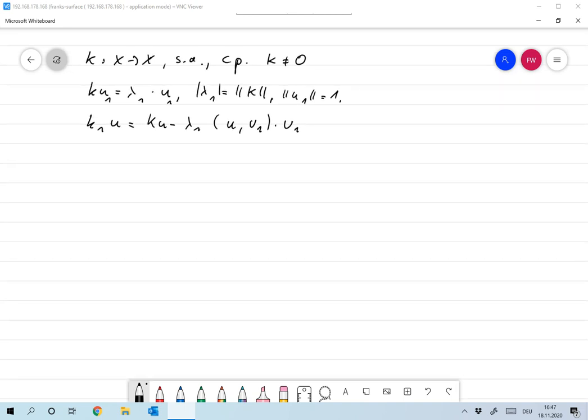First of all, k₁ is self-adjoint and compact. Self-adjoint is clear, and compact due to the fact that k is compact and the range of the second operator that gets subtracted is finite dimensional. So we have the difference of two compact operators, which is again compact.